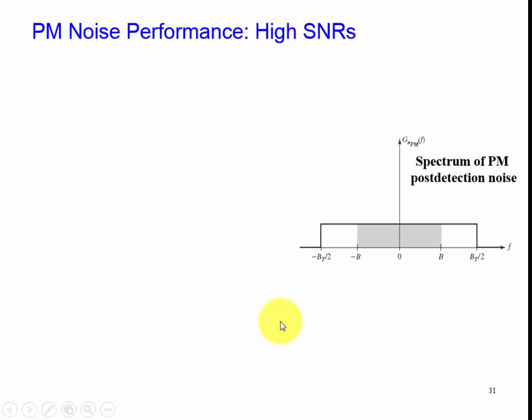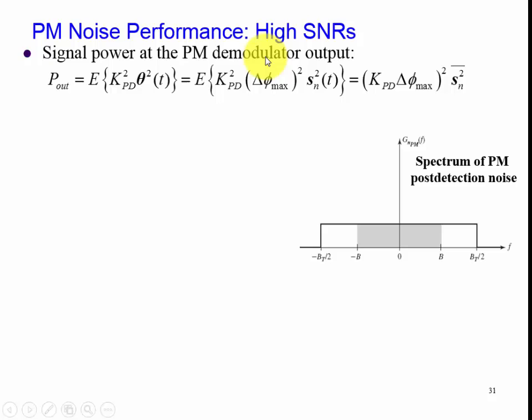And our delta F max curve. So what we have basically is the signal power at the phase modulated demodulated output is given by this expression.